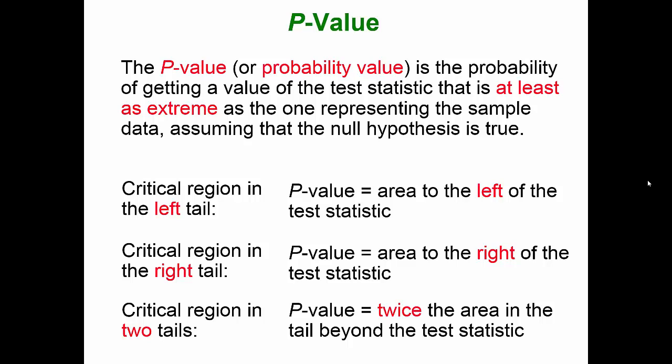The p-value, or probability value, is the probability of getting a value of the test statistic that is at least as extreme as the one representing the sample data, assuming that the null hypothesis is true. In a left-tailed test, the p-value is equal to the area to the left of the test statistic. In a right-tailed test, the p-value is equal to the area to the right of the test statistic. And if we have a two-tailed test, the p-value is equal to twice the area in the tail beyond the test statistic — many times we'll find the area in one tail and double it.